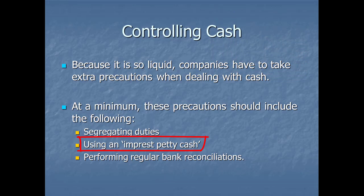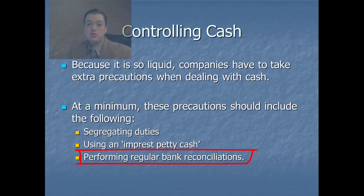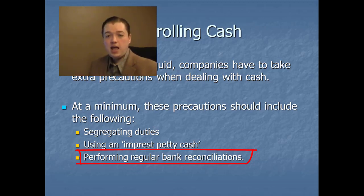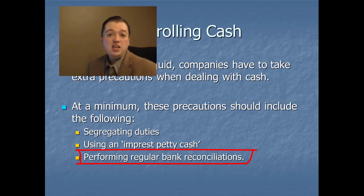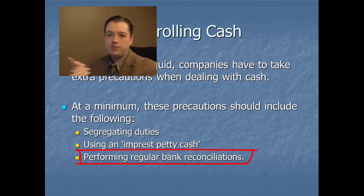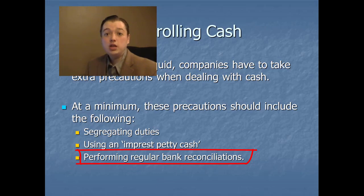The last way to control cash from an accounting perspective is the use of bank reconciliations, which should happen once a month or once a quarter depending on your business. The bank sends you a statement and you compare what the bank says your balance is versus what your accounting system says it should be, and you figure out why they're different. For example, you might be off $10,000 because of a deposit that came in but hadn't cleared yet when the statement printed. Hopefully at the end the two balances reconcile; if they don't, you can go to the bank and figure out what's wrong.